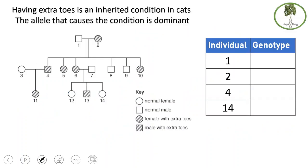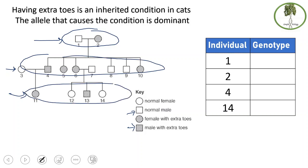A pedigree is a family tree that shows the inheritance of a certain condition from one generation to the next, showing the phenotype. To understand a pedigree, we need the key: an unshaded circle is a normal female, an unshaded square is a normal male, a shaded circle is a female with the condition, and a shaded square is a male with the condition. This particular pedigree has three generations: generation 1, generation 2, and generation 3.